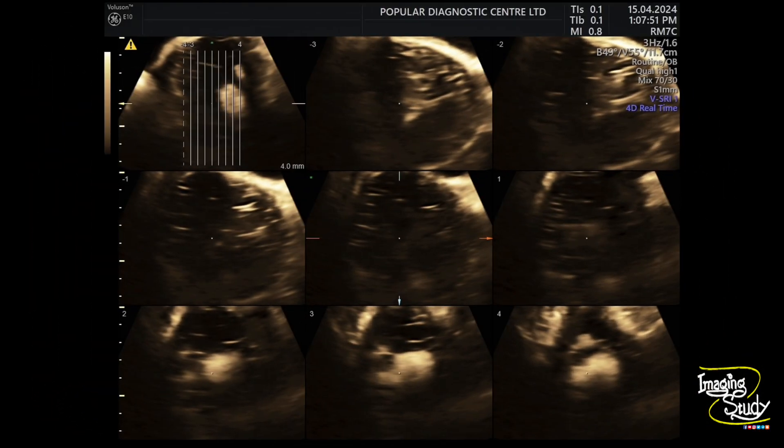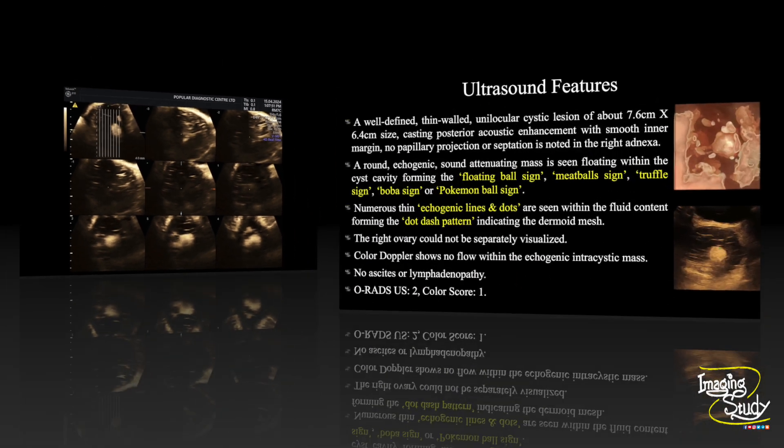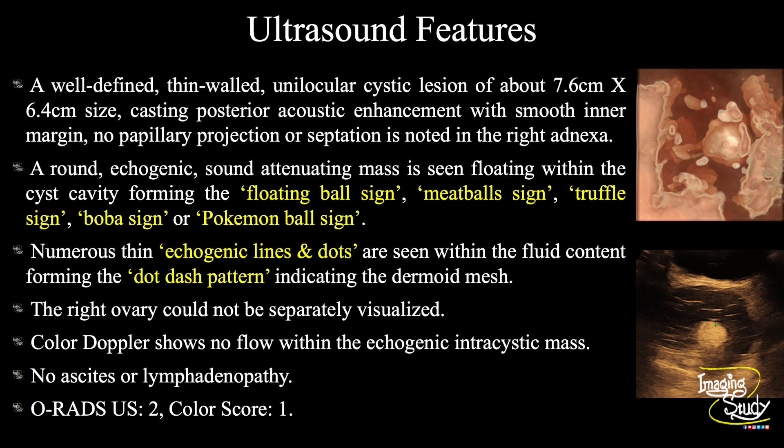And here is the view with changing contrast. In summary: a well-defined thin-walled unilocular cystic lesion of about 7.6 by 6.4 cm, casting posterior acoustic enhancement with smooth inner margin — no papillary projection or septation is noted in the right adnexa. A round echogenic sound-attenuating mass is seen floating within the cyst cavity, forming the floating ball sign, also known as the meatball sign, truffle sign, BOA sign, or even the Pokémon ball sign.